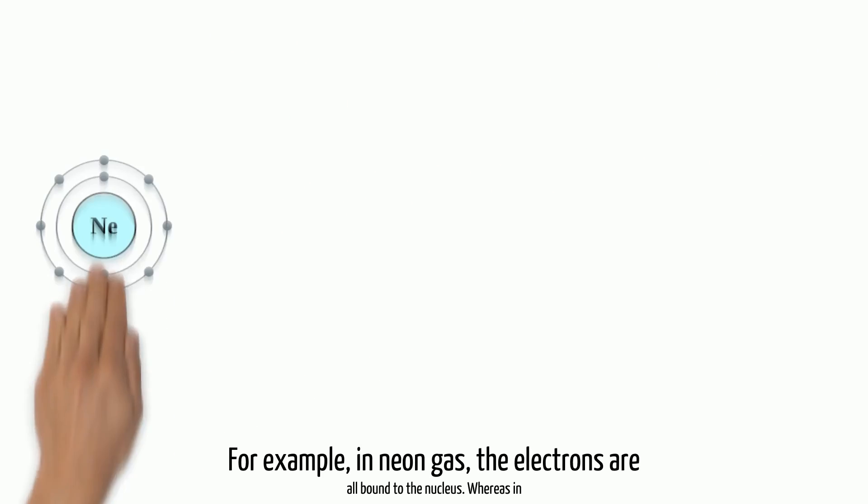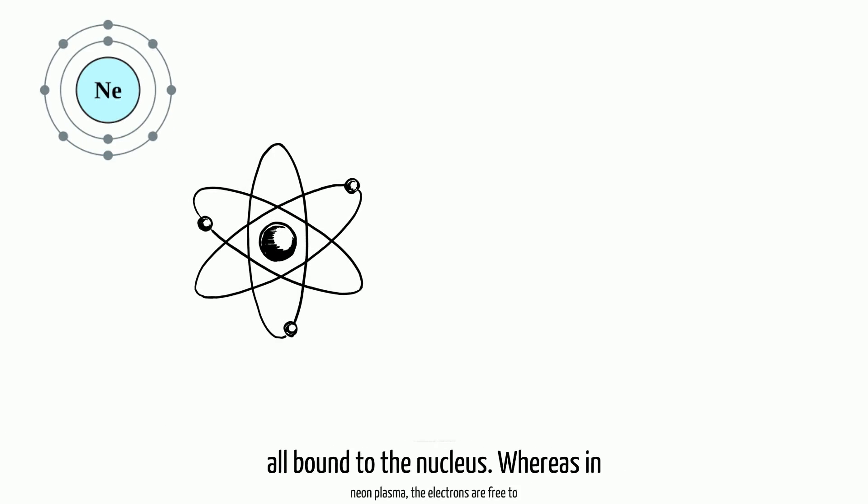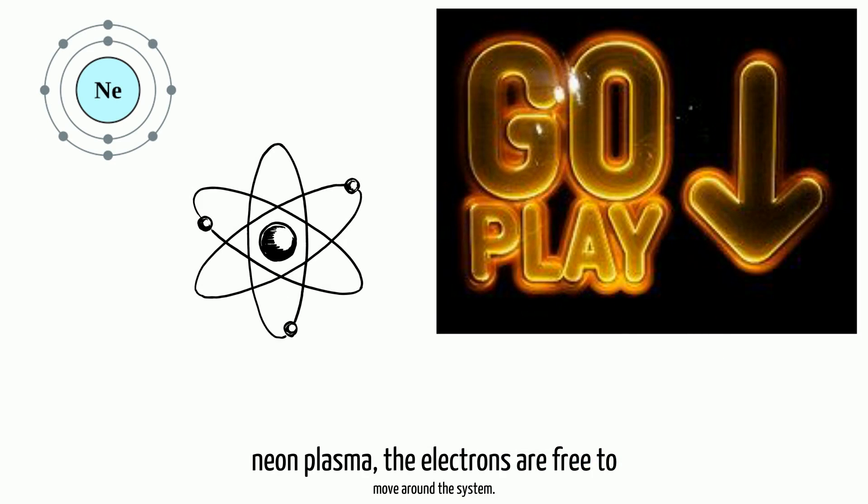For example, in neon gas, the electrons are all bound to the nucleus, whereas in neon plasma, the electrons are free to move around the system.